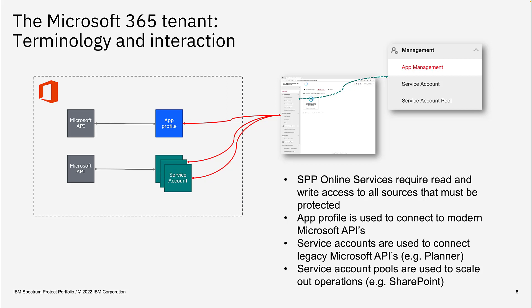In addition to the app profile, there is a so-called service account, which is actually a user account in the Microsoft tenant of the customer. This service account can be used to connect to some legacy APIs, but also to some modern APIs. The SPP Online Service implements both connection types. Service accounts are used for some legacy APIs, for example, Planner content.